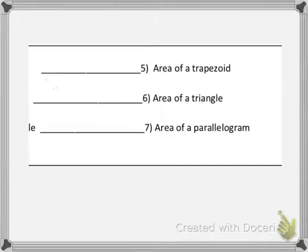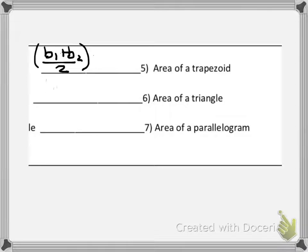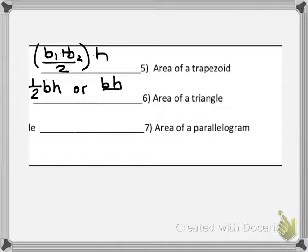Number 5, to find the area of a trapezoid we would have base 1 plus base 2 divided by 2 — remember that's the average of the two bases — multiplied by the height. The area of a triangle could be one half times the base times the height, or base times height divided by 2.